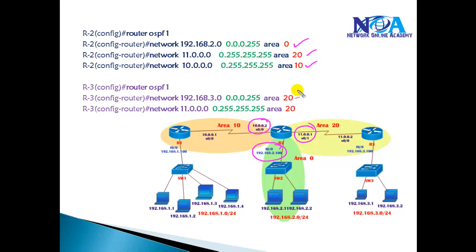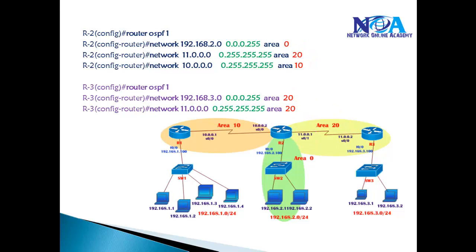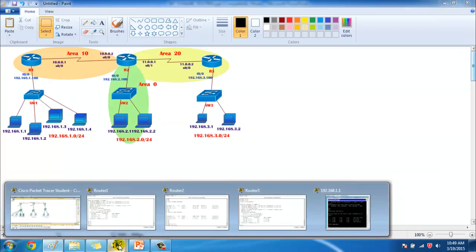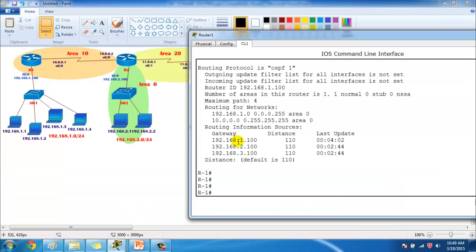On Router 3 we address the 11.network and 3.network in area 20. We need a proper design that satisfies the OSPF design rules. When advertising, we just change the area numbers — the remaining configuration is the same: define the network ID and wildcard mask with the area number.